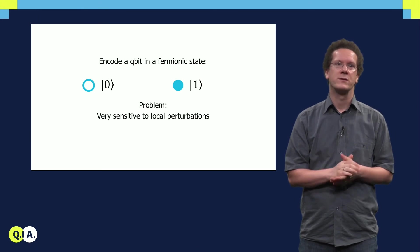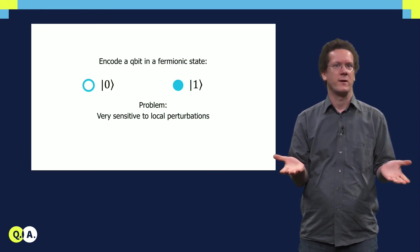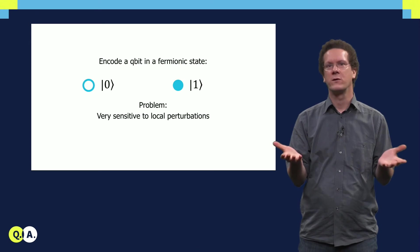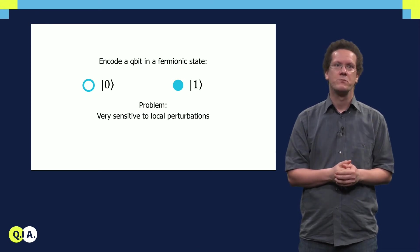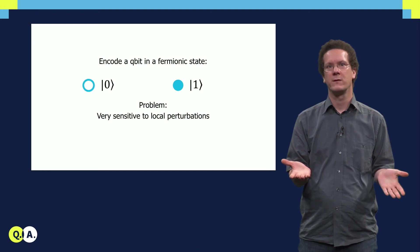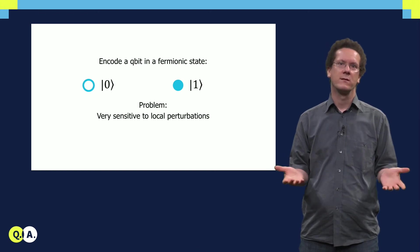Now what is the connection to qubits? With fermionic states, we can encode qubits. If the state is empty, this will be the state 0 of the qubit, and if it is filled, it is the state 1.